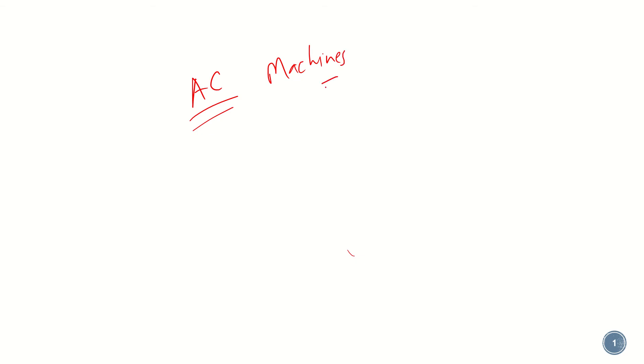Welcome back class. In the last chapters we learned about the working of DC machines, transformers, different configurations of transformers, and how we can analyze them. Now we are moving towards AC machines — alternative current machines. That is our main topic from now onwards.